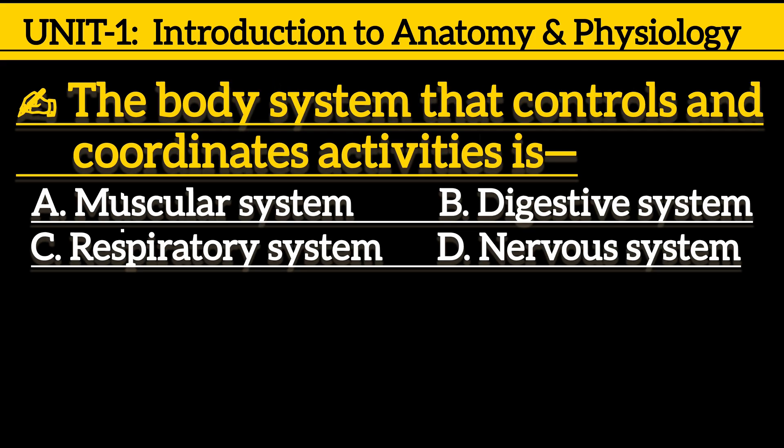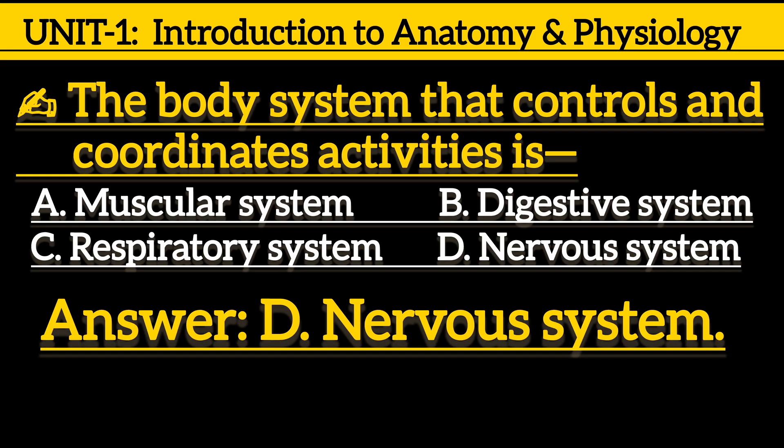Next one is, the body system that controls and coordinates activities is: option A, muscular system; option B, digestive system; option C, respiratory system; option D, nervous system. Correct answer is option D, nervous system.